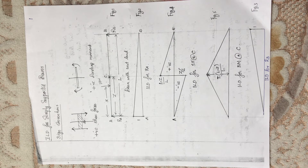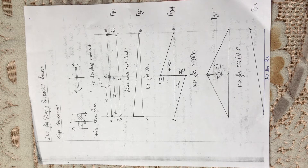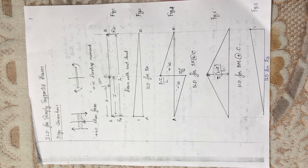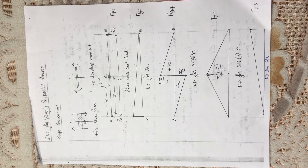To draw the influence line diagram of a beam, we need to know some sign conventions. For shear force: if you are considering the left of a section, the upward direction is positive; if considering the right, the downward force is positive. For bending moment: if considering the left of the section, the clockwise moment is positive; if considering the right, the anticlockwise moment is positive. These are the sign conventions used for a simply supported beam.